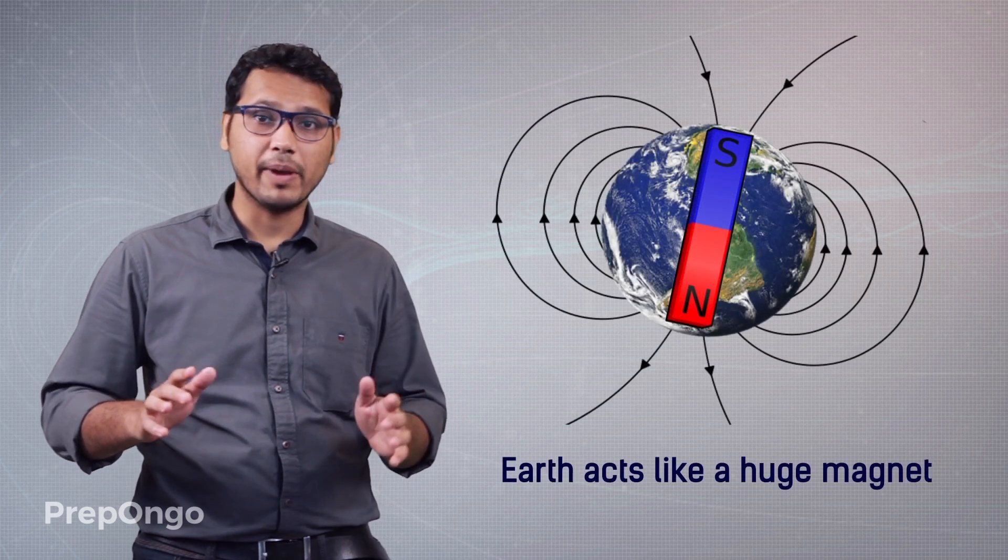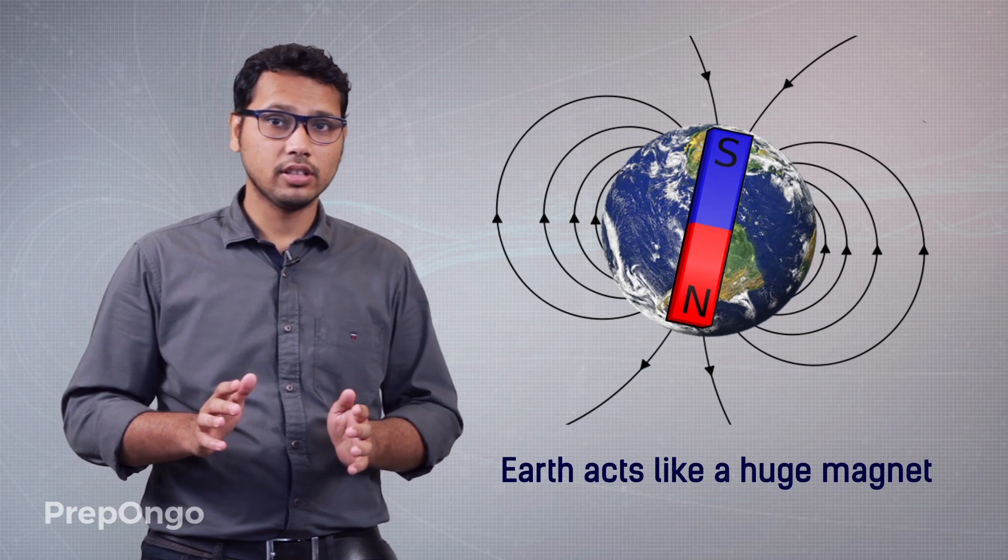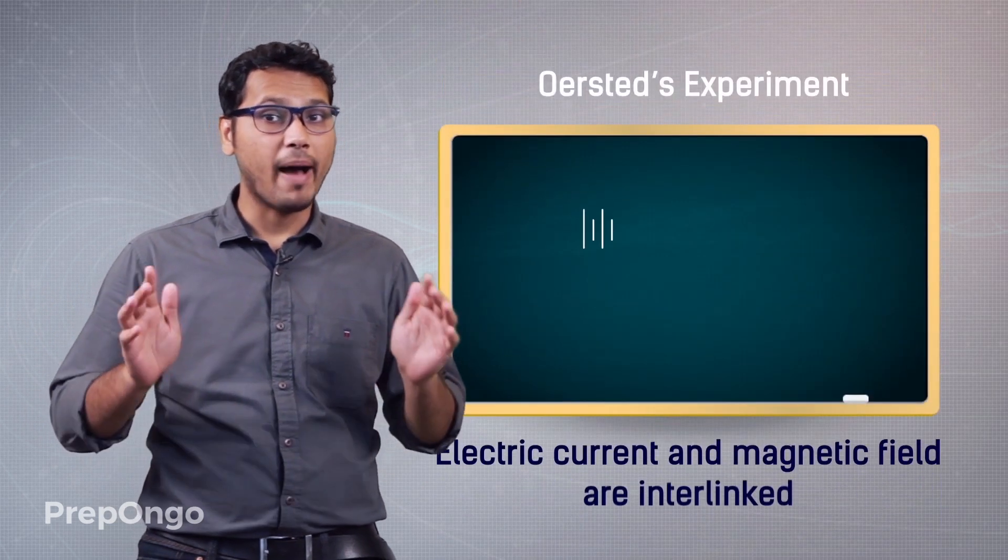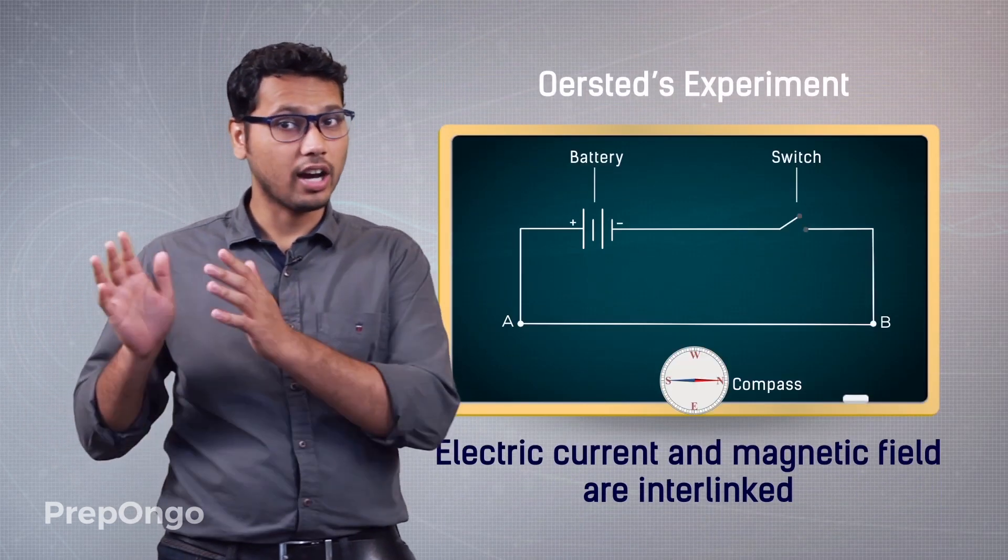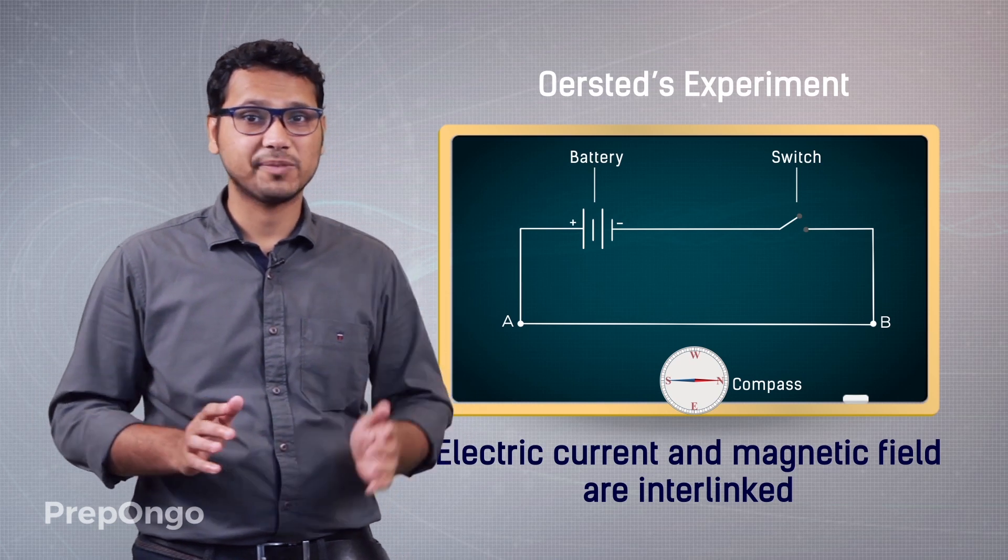Hello everyone, if we look from the beginning of this chapter we had learnt many amazing concepts. We had seen that Earth is a big huge magnet. Then we had seen that magnetic field and current are linked in the Oersted experiment.